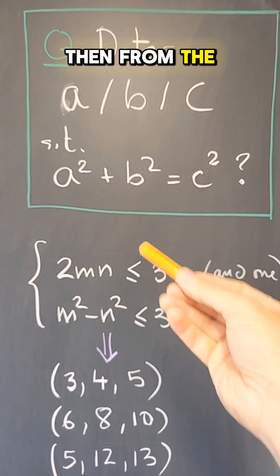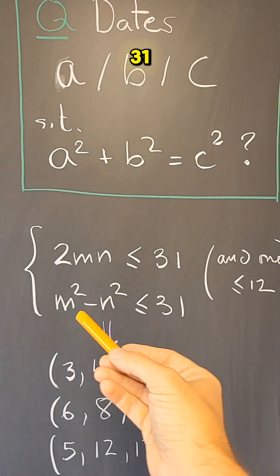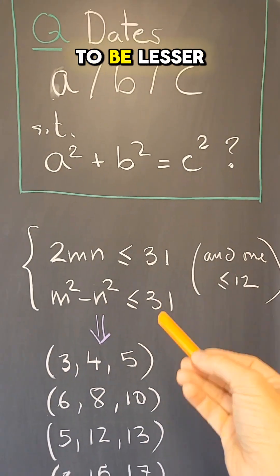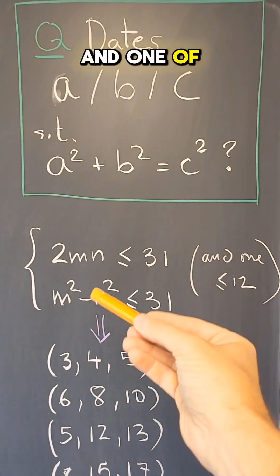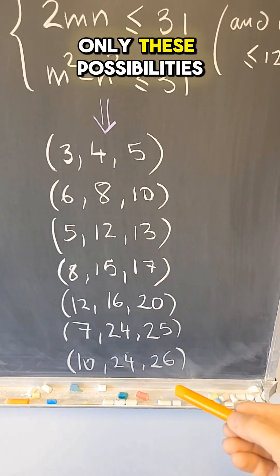Then, from the formula for Pythagorean triples, we know that 2mn has to be less or equal to 31, m squared minus n squared has to be less or equal to 31, and one of these two numbers has to be less or equal to 12, and there are only these possibilities.